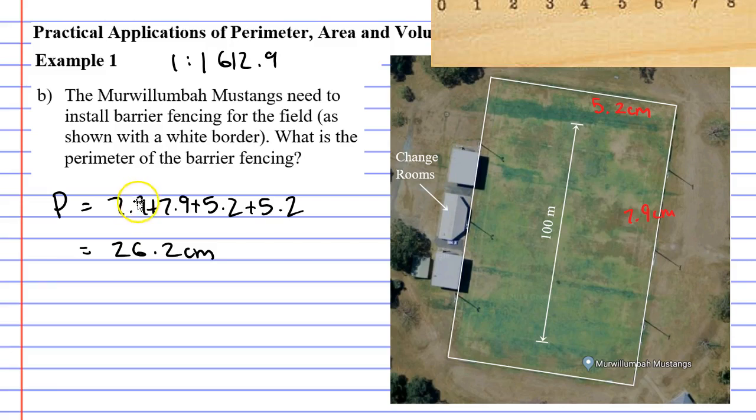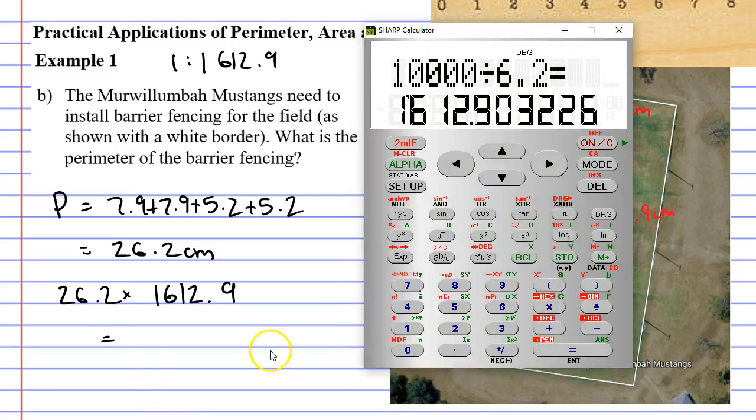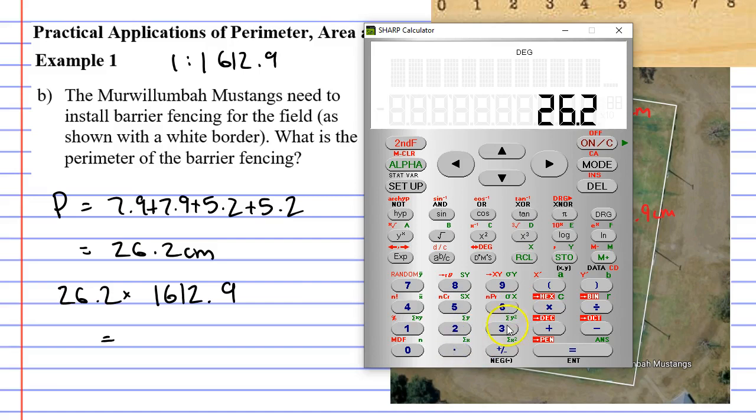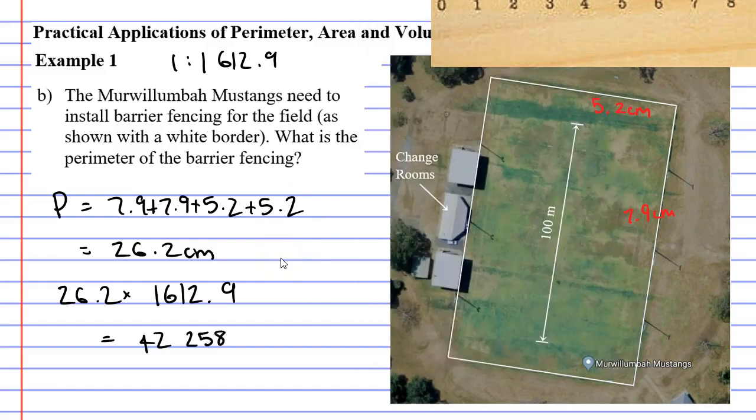That is the drawing length. We need to come up with the actual real life length. To do that, we need to multiply our 26.2 by 1,612.9. 26.2 times 1,612.9 equals 42,257.98, which we'll round to 42,258. That's still in centimetres. If we convert to metres, we have 422.58 metres of barrier fencing that we need to install.